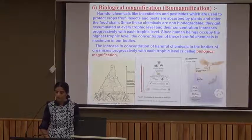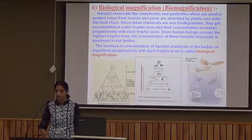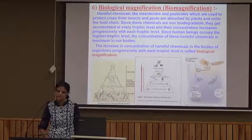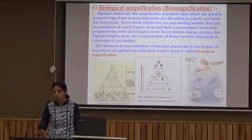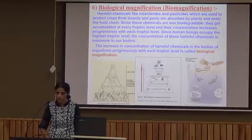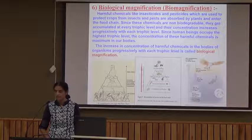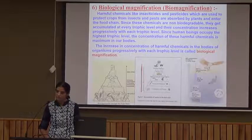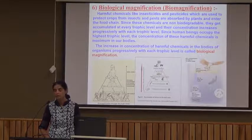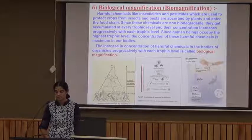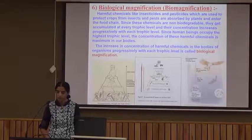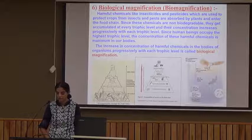Biological magnification, also called biomagnification: harmful chemicals like insecticides and pesticides are sprayed on crops to protect them from insects and pests. These pesticides are absorbed by plants and enter the food chain. Since these chemicals are non-biodegradable, they get accumulated at every trophic level and their concentration increases progressively with each trophic level. Since human beings occupy the highest trophic level, the concentration of these harmful chemicals is maximum in our bodies. This progressive increase in concentration of harmful chemicals is called biological magnification or biomagnification.